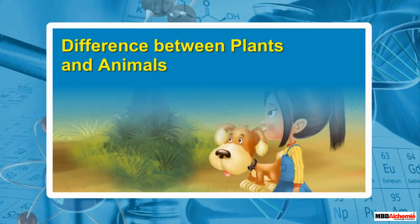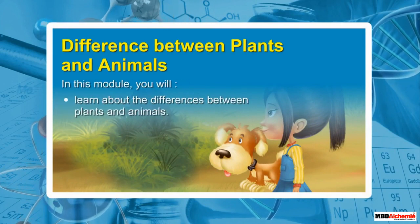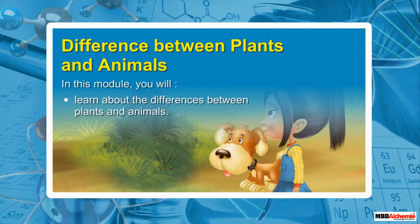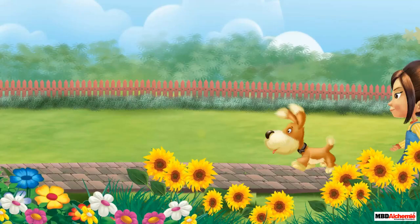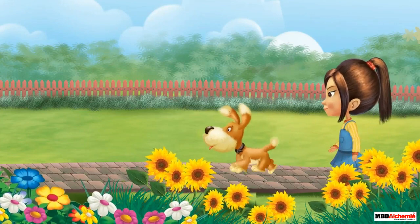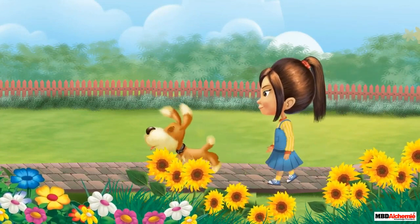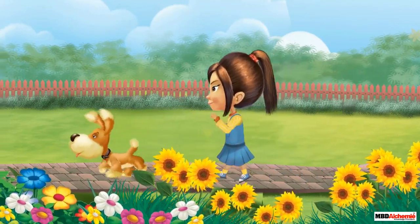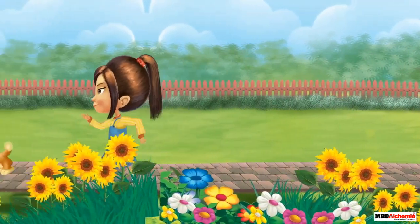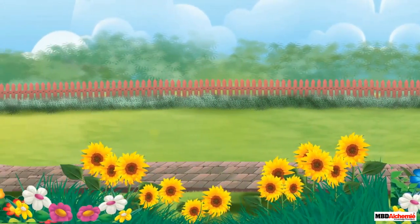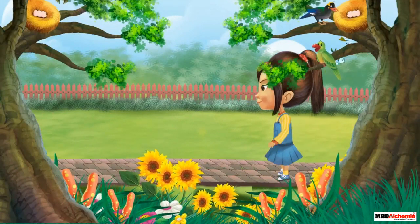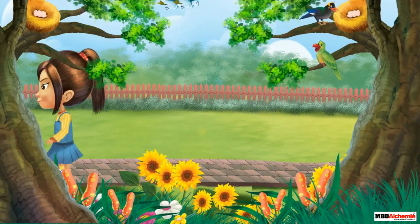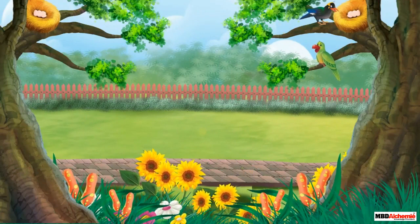Difference between plants and animals. In this module, you will learn about the differences between plants and animals. Alicia and Diamond have come for a walk in the park. Look, Diamond is running so fast and Alicia is running behind him. They are passing so many trees. You can see the trees are not moving along with Alicia and Diamond.